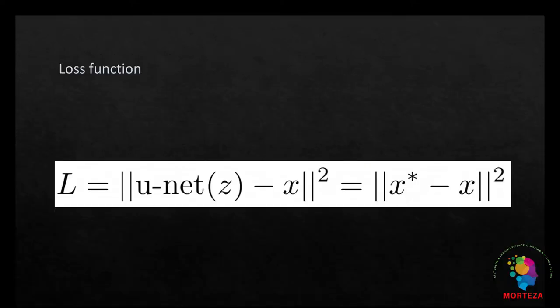The weights of the networks that I just showed you are optimized using gradient descent to minimize the following loss function, where X is the noisy image, and X star is the generated denoised image, the prior.